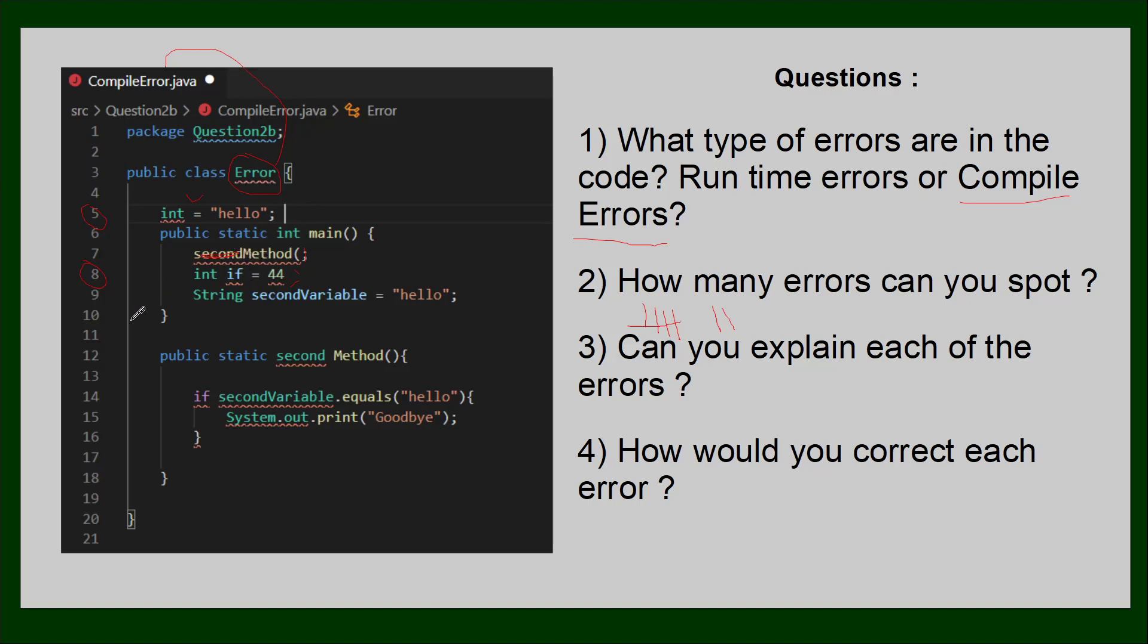If we keep going down, line nine is okay, line ten is okay. Line twelve, we are occurring a return type error. If you look here, this is not expecting anything to be returned. We don't have a return method, so this should be void. That's another error - the method signature is not correct.